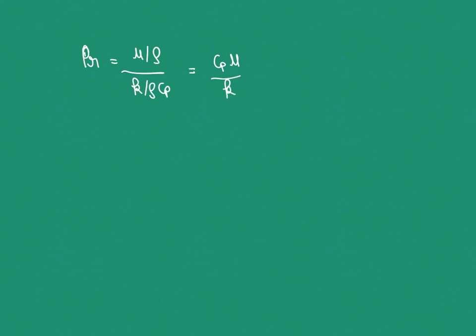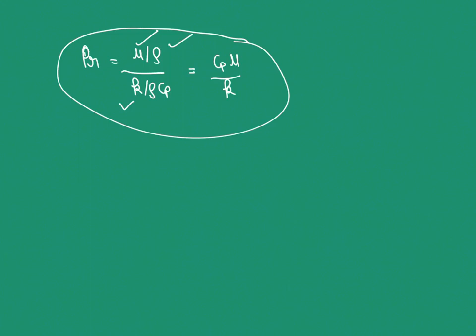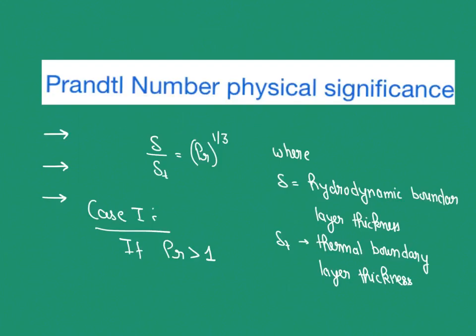Most people memorize the formula: Prandtl number = cp·μ/k. Here, μ is dynamic viscosity with units of Pascal-second or N·s/m²; ρ is density; k is thermal conductivity with units of W/(m·K); and cp is the specific heat capacity of the fluid with units of J/(kg·K). Please remember all these terms.